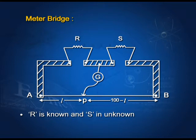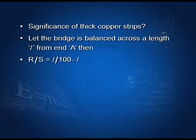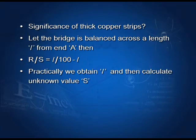We move the jockey between A and B to find the point where the galvanometer shows zero deflection. If point P where the galvanometer shows zero deflection is at a distance L from end A, then the length of AP is L and the length of BP is 100 minus L. So R/S = L/(100 − L). We obtain the value of L and then calculate the unknown resistance S.